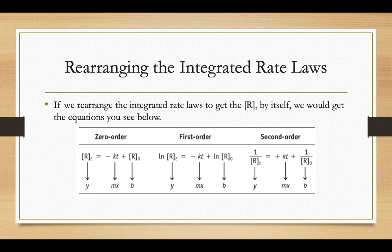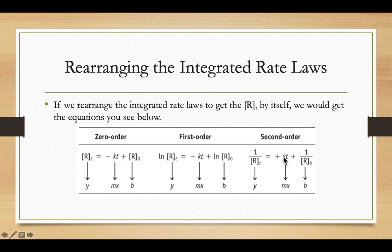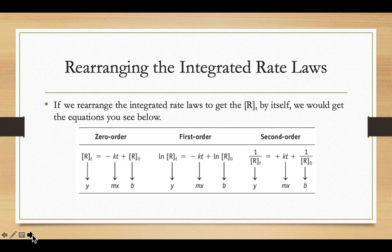As far as the slope of our equations — the mx plus b — the slope in a zero order graph is going to be the negative of the K value. Same thing for a first order reaction: slope is the negative of the K value. For second order, the slope is the positive K value. On the x-axis is our time. The y-intercept will be either our original concentration, the natural log of that original concentration, or the inverse of the original concentration.